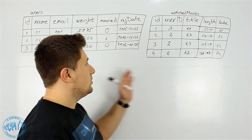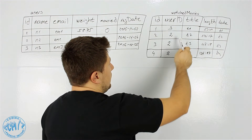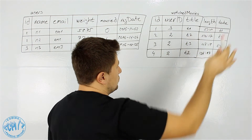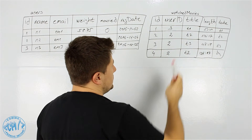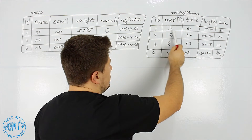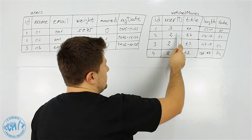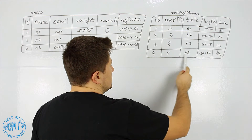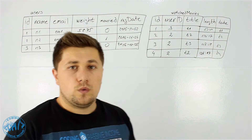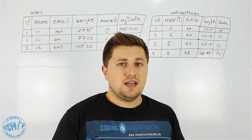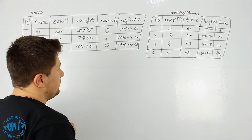In the watched_movies table we have information about the movies watched by each user. The user_id here represents the unique ID from the users table, so you know who watched which movie. This table has columns: user_id, title, length, date, and so on. We can notice that the user with ID 3 is watching only one movie, and the user with ID 2 is watching three movies.